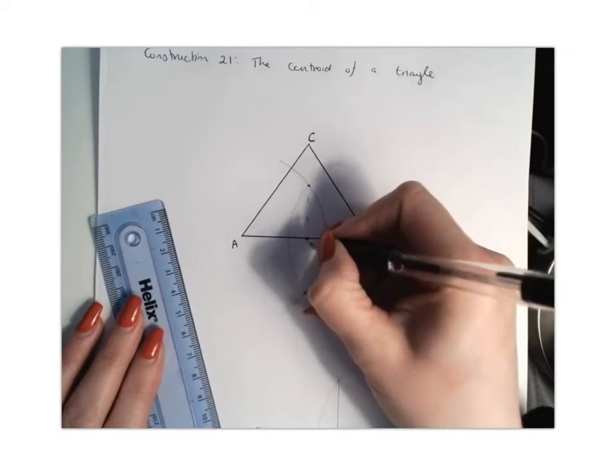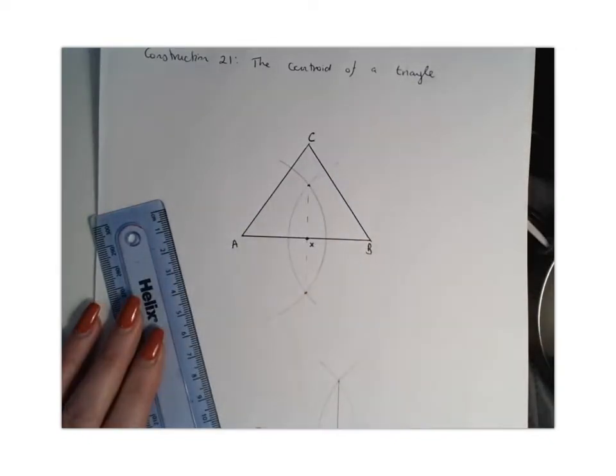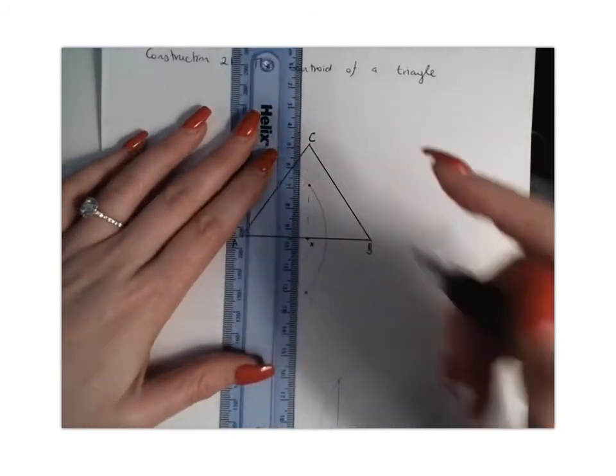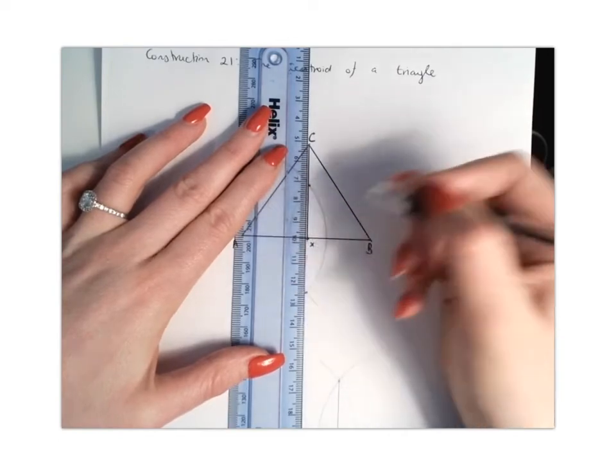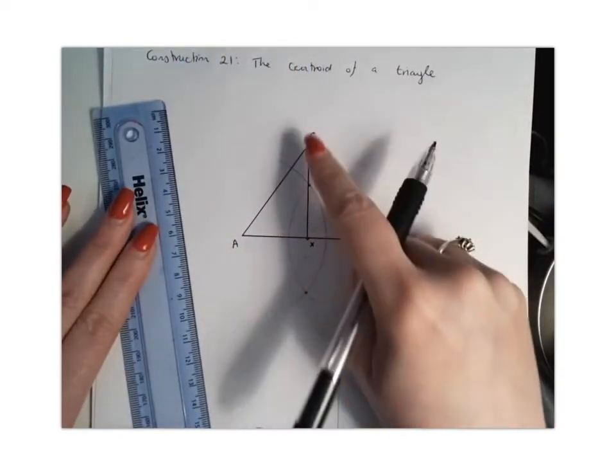So I'm going to label that point X. And what we're going to do straight away then is we're going to take our midpoint and draw a line from that up to point C. And that's our first median line.